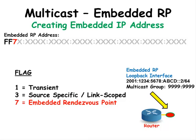Next, we have to set the flag so that the routers will recognize that this IP address has an embedded Rendezvous Point in it. We will use the number 7 to let them know.